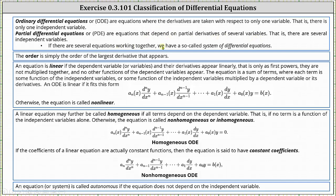If we have more than one differential equation working together, we have a system of differential equations. The order is simply the order of the largest derivative that appears. An equation is linear if the dependent variable or variables and their derivatives appear linearly — that is, as first powers — they are not multiplied together, and no other functions of the dependent variables appear.